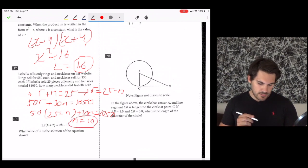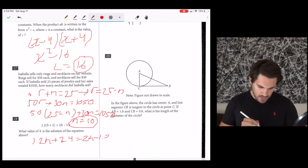Number 18. 1.2 times H plus 2 equals 2H minus 1.2. What value of H is the solution to the equation above? Let's just do it out. Distribute out the left side. 1.2H plus 2.4 equals 2H minus 1.2. Combine some like terms. 3.6 equals 0.8H. Divide both sides by 0.8. H is going to be 4.5.